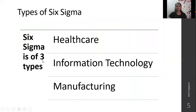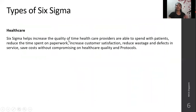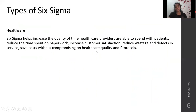Types of Six Sigma. Six Sigma is of three types: Healthcare Six Sigma, Information Technology Six Sigma, and Manufacturing Six Sigma. Six Sigma in Healthcare helps to increase the quality time healthcare providers are able to spend with patients. It reduces time spent on paperwork, increases patient satisfaction, reduces wastage, and saves cost to the hospital without compromising on healthcare quality or protocols.